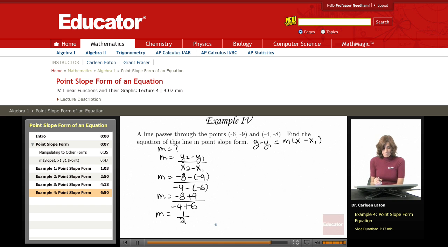The next step is to find values for y1 and x1, and I could use either one of my pairs. I'm going to select the first pair. So I have y minus negative 9 equals m is 1 half, times x minus negative 6. Simplifying that, I get y plus 9 equals 1 half times x plus 6.